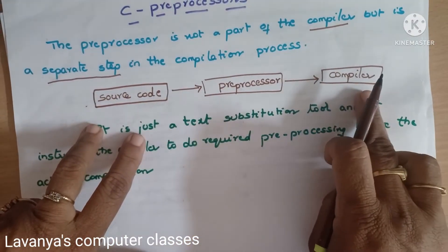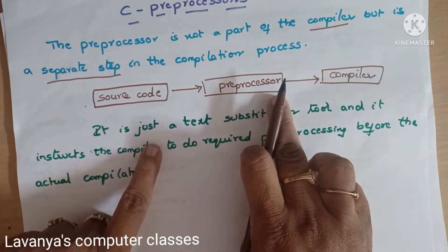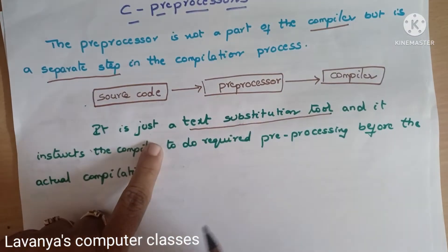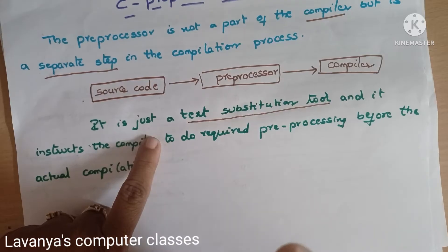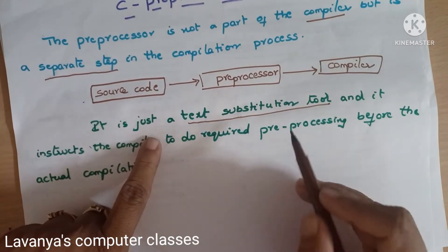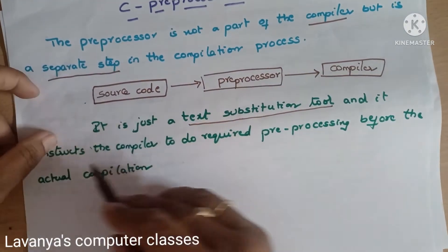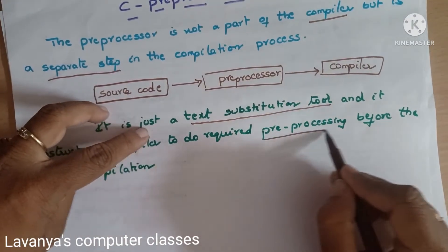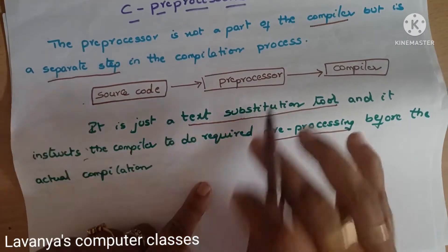Before compiling the program, we need something — that's why it is called as Pre-Processor. It is just a text substitution tool. It instructs the compiler to do required pre-processing before the compilation.